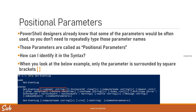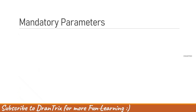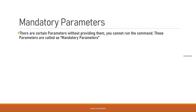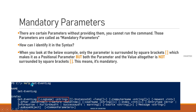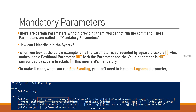Hope you understand it. The second type is mandatory parameters — certain parameters without which you cannot run the command. To identify them in the syntax, look at the Get-EventLog help again. The parameter name is in square brackets (making it positional), but both the parameter and its value are NOT surrounded by square brackets, which means it is mandatory.